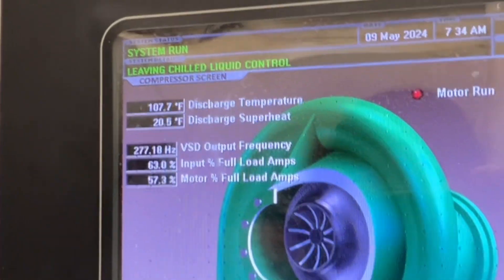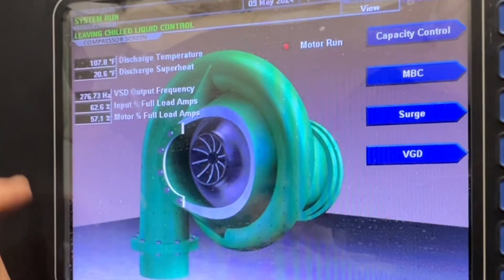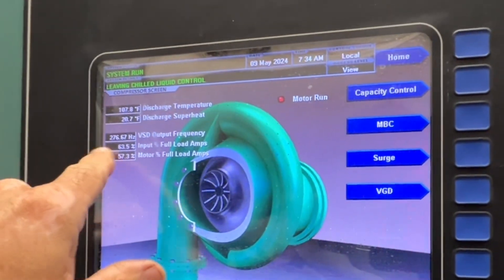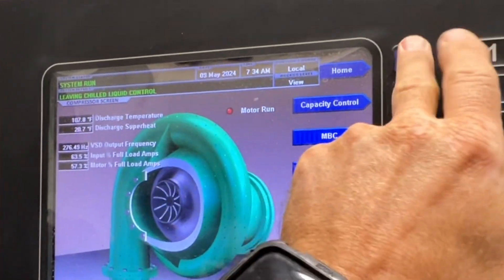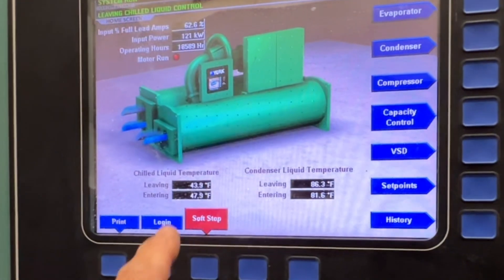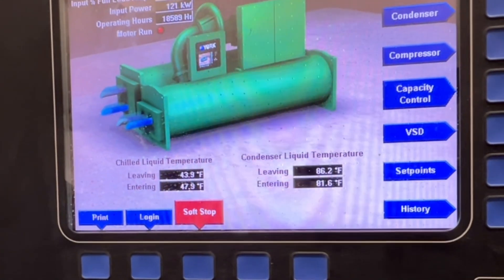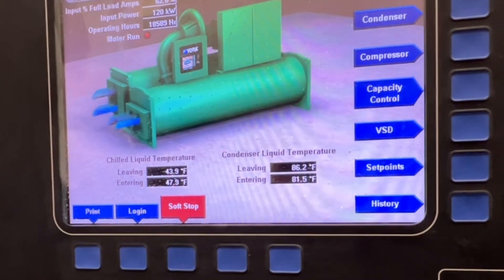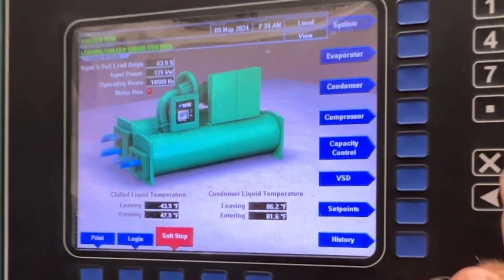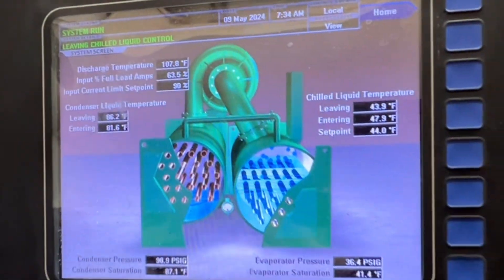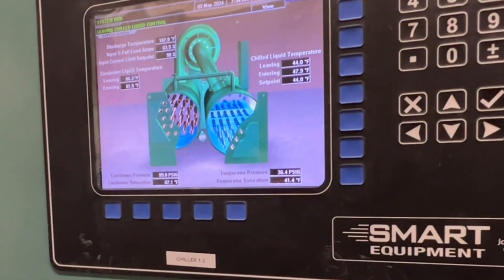Currently discharge superheat is 20.7. We are about 57 percent, we're not fully loaded up. Our water temperature is entering at almost 48 and leaving at 44. The building does have load on it and I have chiller one shut down. Let's take a look at that.